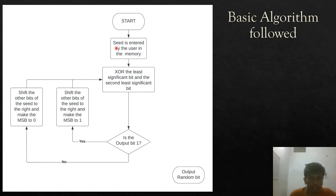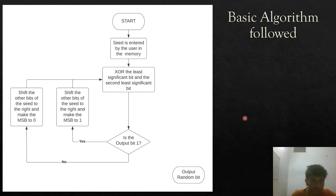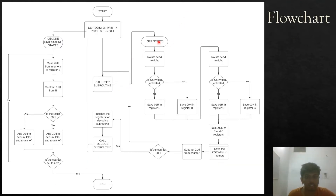I will now explain the basic algorithm. After starting the program, a seed is entered by the user into memory. The XOR of the least significant bit and the second least significant bit is taken. If the output bit is 1, the most significant bit is set to 1; if the output bit is 0, the most significant bit is set to 0, and the least significant bit is removed. This is summarized in the detailed flowchart which includes all commands implemented in 8085, which I will explain step by step through the code.